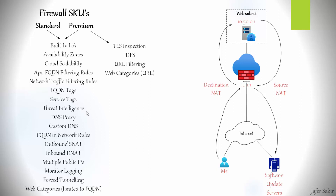Threat intelligence allows you to alert on or deny traffic to and from known malicious IP addresses and domains based on Microsoft's threat intelligence feed. DNS proxy lets you forward DNS-based queries to a DNS server. With custom DNS you can configure the firewall to use your own DNS servers to resolve queries. You can also use fully qualified domain names inside network rules — for example, allowing a virtual machine to reach cisco.com — but DNS proxy must be configured for this to work.